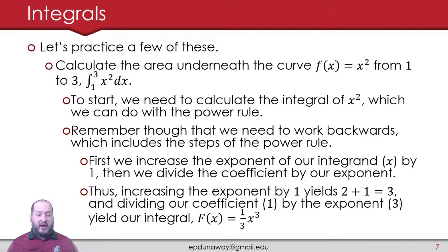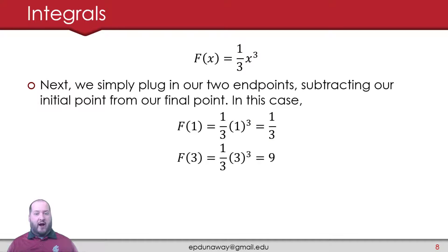A great way to check this, to make sure you did it right, take the derivative of that. If I don't get x squared, I did something wrong. And that's exactly what I'm going to get if I take the derivative of that using the power rule. That's the value of my integral. But because this is a definite integral, I now need to use my endpoints. I'm going to plug in my two endpoints, 1 and 3. I'm going to subtract the initial point from our final point. So plugging in 1, capital F of 1, 1/3 times 1 cubed, that's just 1/3. Capital F of 3, 1/3 times 3 cubed, that equals 9 because 3 cubed is 27 divided by 3 is 9.